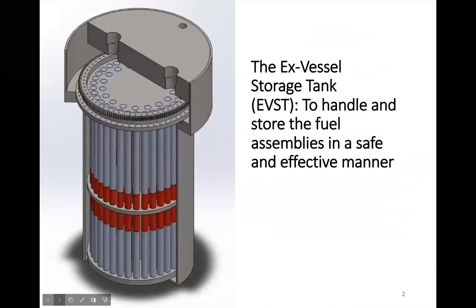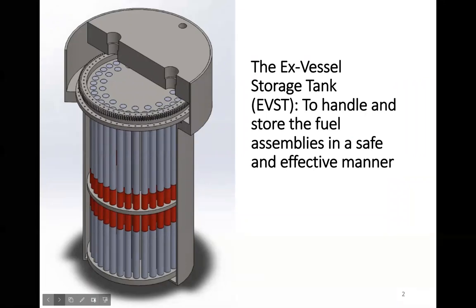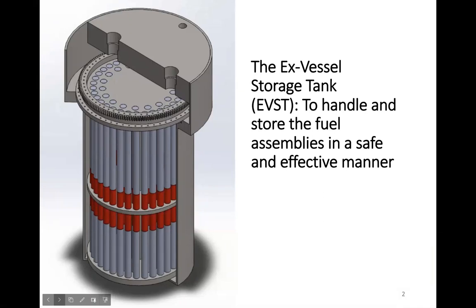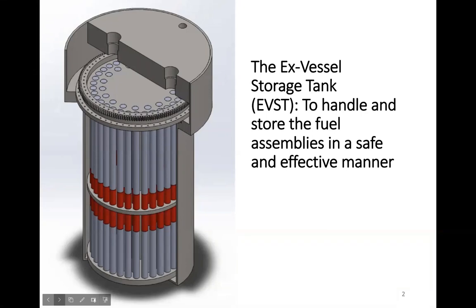The X-Vessel Storage Tank is a core assembly storage vessel filled with argon. It includes a rotating carousel and is used for buffer storage of irradiated assemblies removed from the reactor vessel. Used fuel assemblies have been cooled for several years inside the reactor before transfer to the EVST to allow handling in argon with passive convective air cooling.